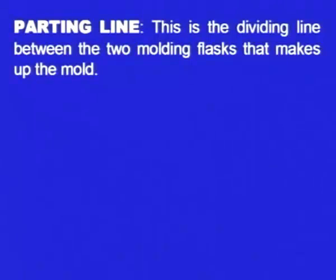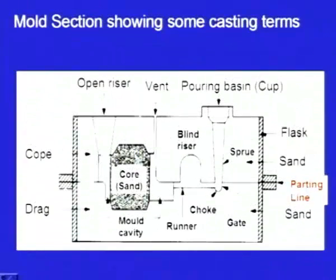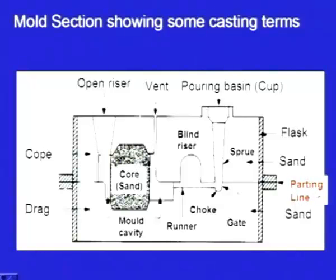Next one is parting line. This is the dividing line between two moulding flasks. Here we can see the sand mould with the upper moulding box — the cope — and the lower moulding box — the drag. The line separating these two moulding boxes is known as the parting line.